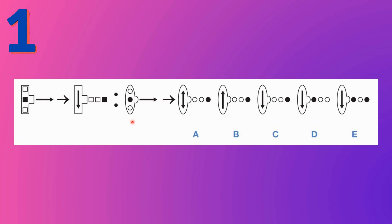Likewise, the arrow in this pattern which is pointing to the right should turn down and go inside the oval. Looking at the options, only C, D, and E have the arrow pointing downward. Option B has an upper arrow, so we can cross that out. Option A has a double-sided arrow, so we can rule out A as well.